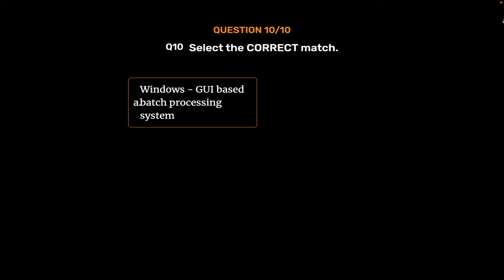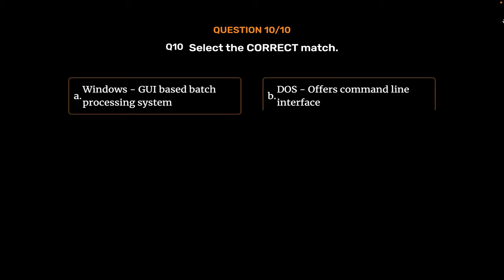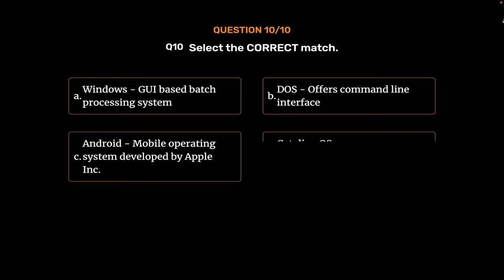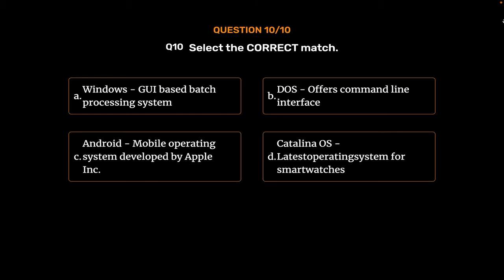Question No. 10. Select the correct match. Option A: Windows — GUI-based batch processing system. Option B: DOS — Offers command line interface. Option C: Android — Mobile operating system developed by Apple Inc. Option D: Catalina OS — Latest operating system for smartwatches. The correct answer is Option B: DOS offers command line interface.